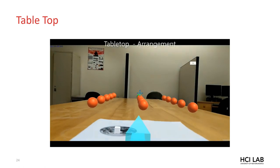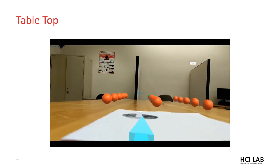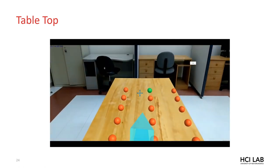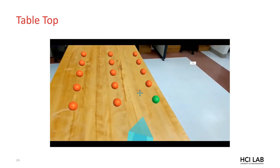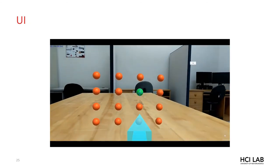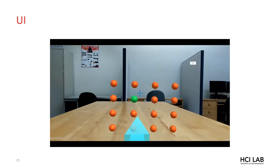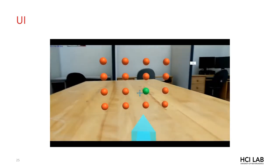The tabletop arrangement had targets arranged on a horizontal plane, where each target is within two meters of the user. UI provided targets that are arranged vertically, like in a mobile app's menu.